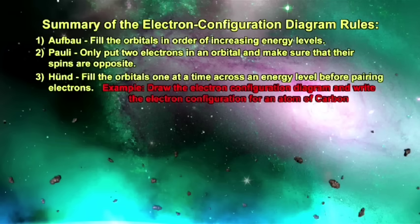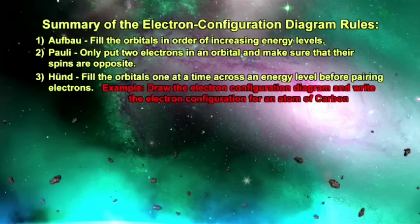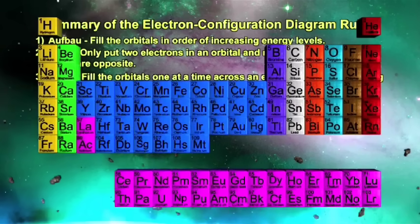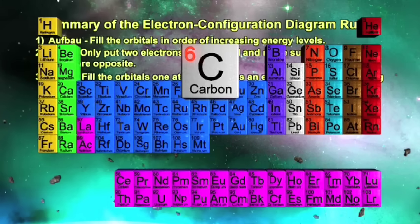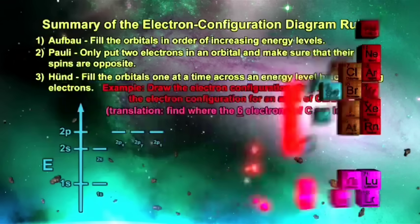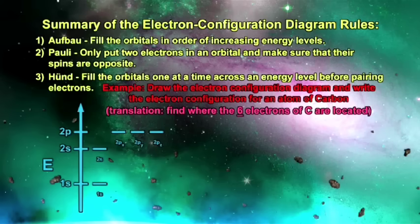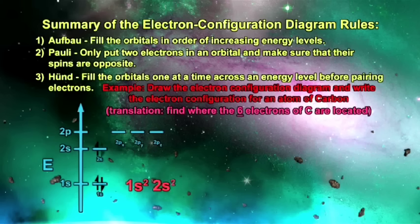To work this example problem, we first need to consult the periodic table to ascertain how many electrons are in a neutral atom of carbon. The atomic number of carbon is 6, thus a neutral atom of carbon has 6 electrons. Therefore, this problem simply translates to finding a home for 6 electrons. Following our three simple rules, we place all 6 electrons into our diagram — start at the bottom, working our way up, 2 electrons per orbital with opposite spin, and fill the orbitals one at a time across an energy level before pairing electrons.